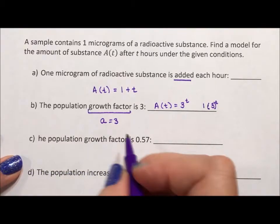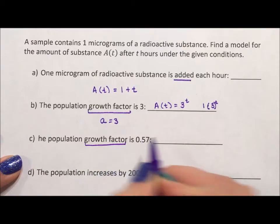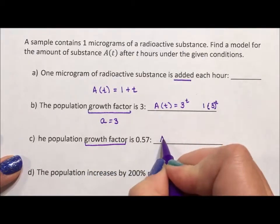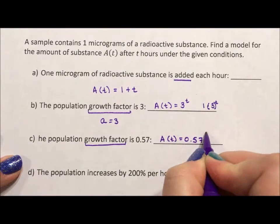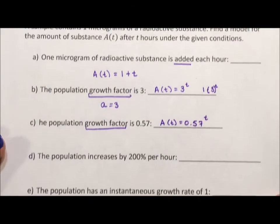The population growth factor—I'm giving you the growth factor is 0.57. So A(t) equals 0.57 to the t.